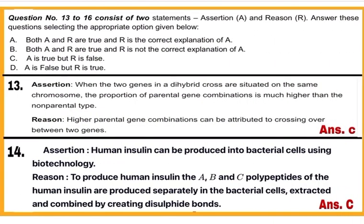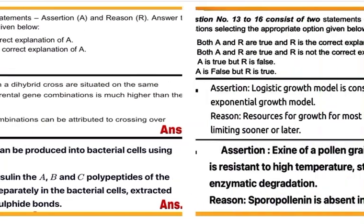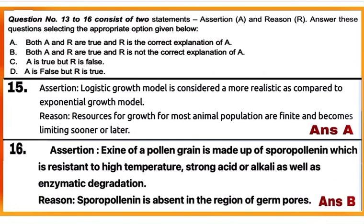Question numbers 13 to 16 of Section A are assertion-reason type. Read the instructions and mark the correct option. See question numbers 13 and 14, and questions 15 and 16.